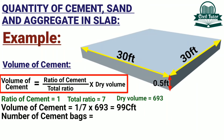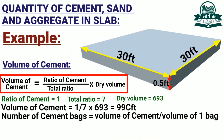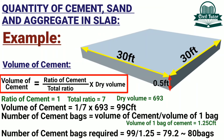The number of cement bags equals volume of cement divided by volume of one bag of cement. The volume of one bag of cement is 1.25 cubic feet and the volume of cement is 99 cubic feet. Substituting these values, the required number of cement bags is 79.2, which is approximately 80 bags.